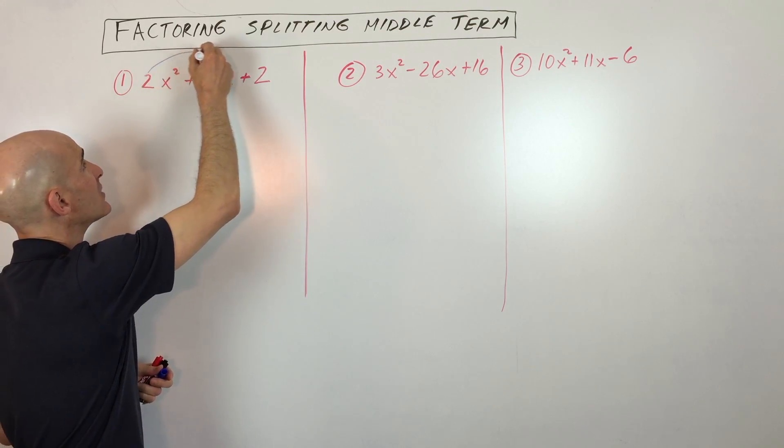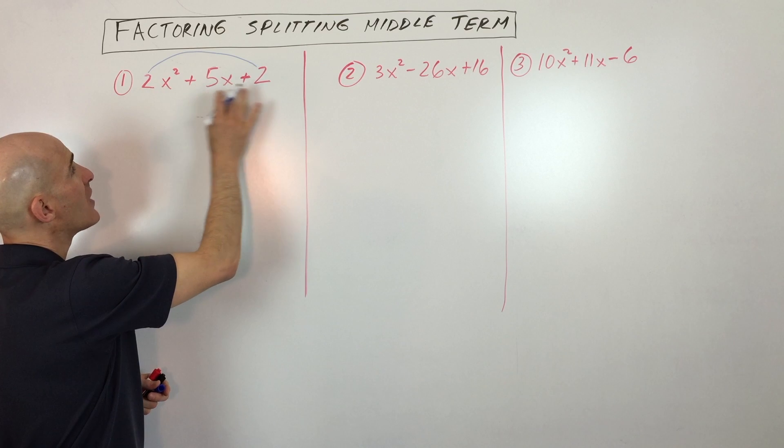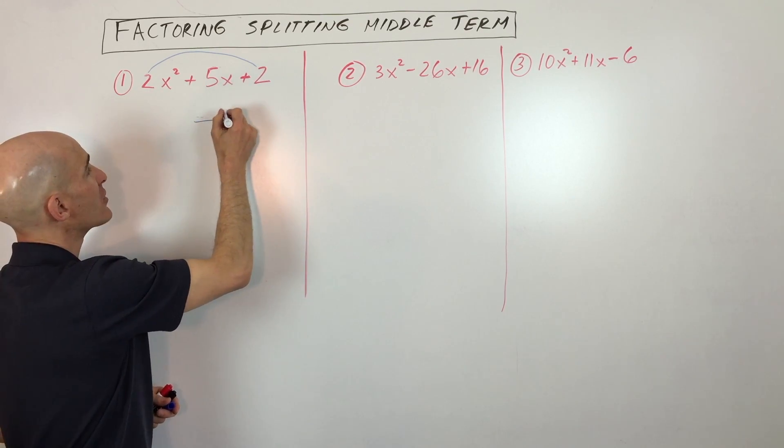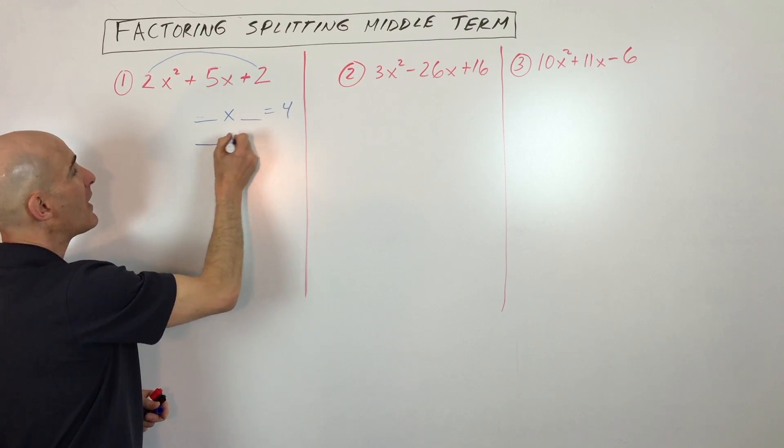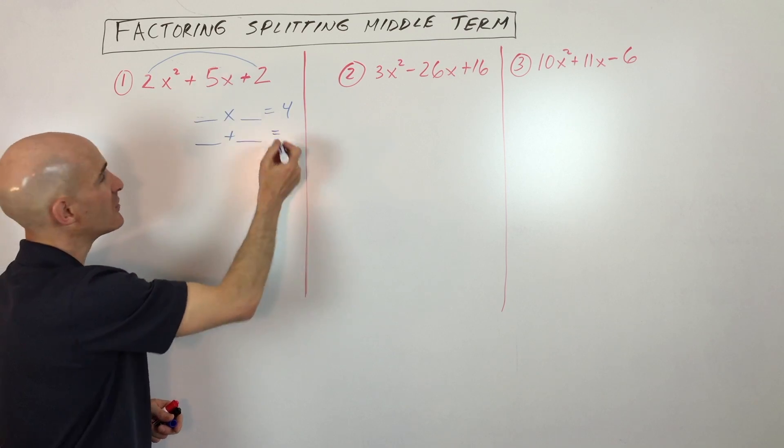What you want to do is take the leading coefficient times the constant. So you say to yourself, what two numbers multiply to four? I'll make a little chart here. What two numbers multiply to four, but at the same time those same two numbers have to add to the middle coefficient, five.